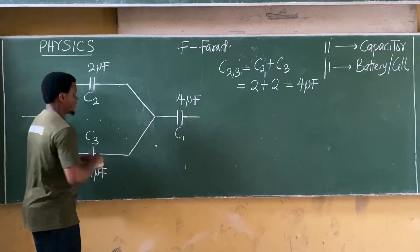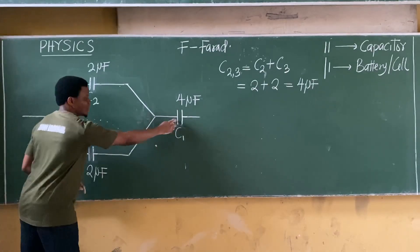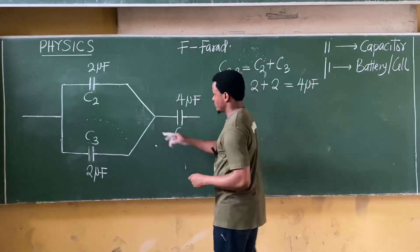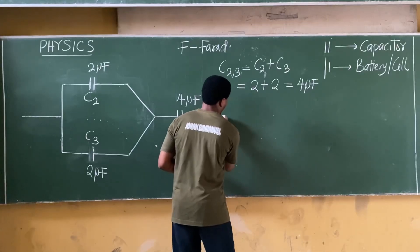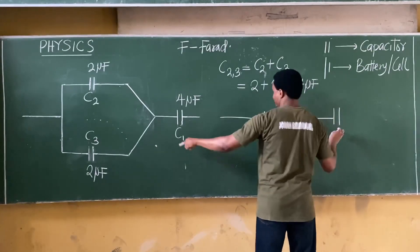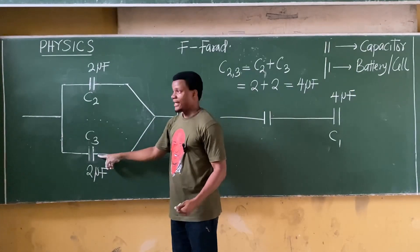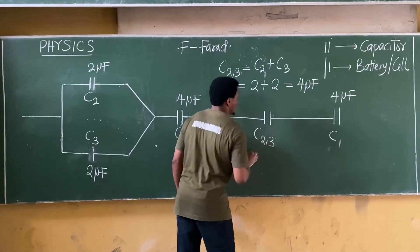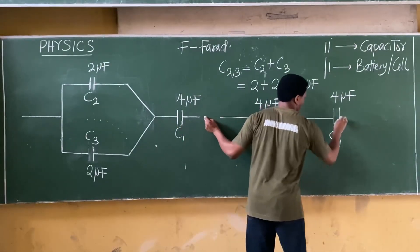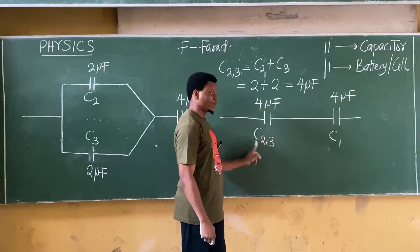Now C2 and C3 have been resolved to give 4 microfarad — they become one combined capacitor. That combined capacitor C23 is now in a straight line with C1, meaning they are connected in series. So the redrawn circuit has C1 and C23 end to end, with C23 equal to 4 microfarad.